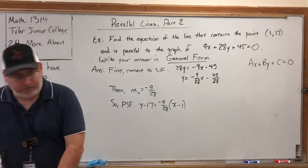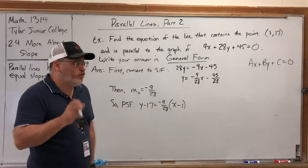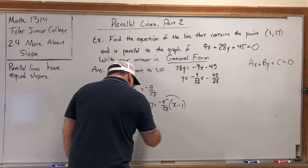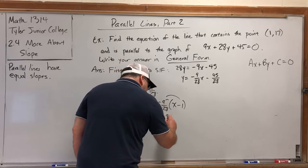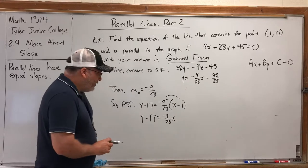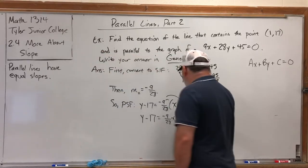We'll fix that part last. So let's fix the fact that we have parentheses that we don't want. Let's go ahead and distribute: Y minus 17 equals negative 9/28 X. Luckily the thing we're multiplying by is 1, so it's pretty easy, but don't forget that negative times negative is positive.